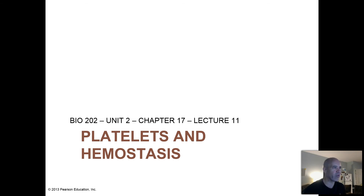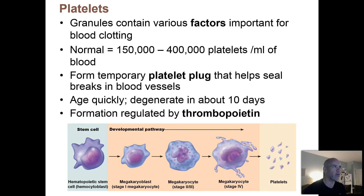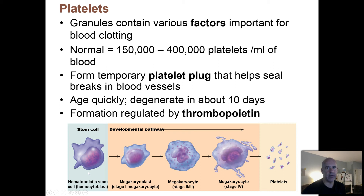This is sort of important for your survival, and these processes very much involve the platelets, so we're going to hear more about those particular cells here. Your platelets are made in the red bone marrow just like your other formed elements of blood, and they are derived from those hemocytoblast stem cells we've talked about before.